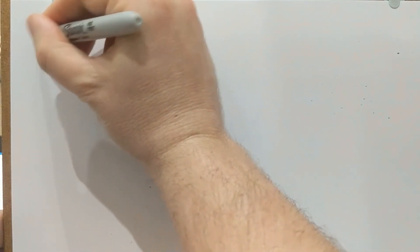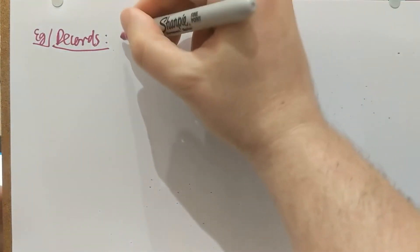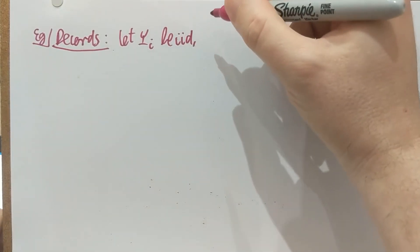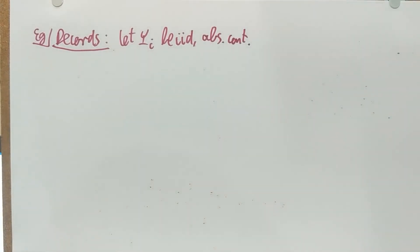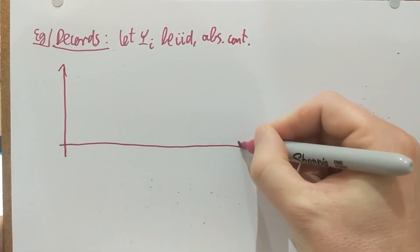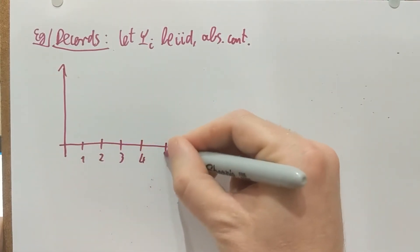Here I want to show you an example involving records of random variables. Let Y_i be i.i.d., and assume for simplicity that they have a continuous distribution — absolutely continuous. In particular, for any finite number of them, the probability that two agree is zero, so there are no ties. Let me draw a picture: these are the values of the Y_i's plotted against i.